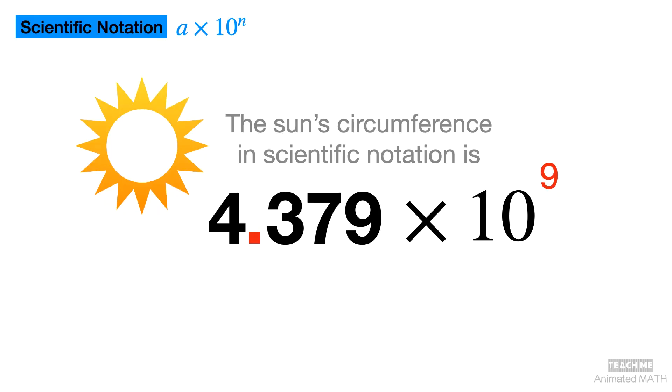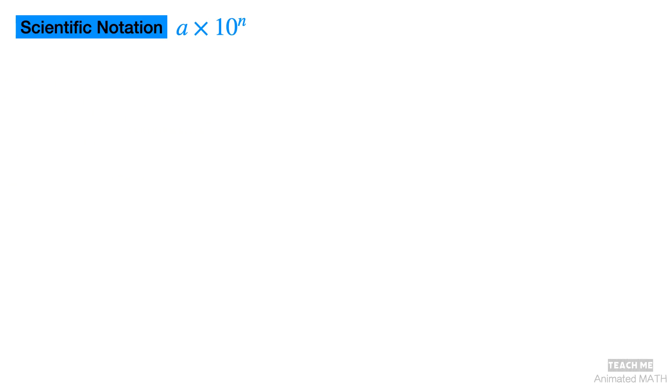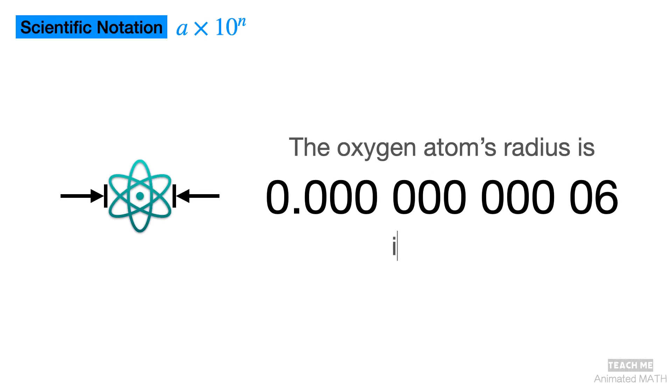Now let's try something very small, like the air we breathe. We breathe in oxygen every time, but it's so small our naked eye cannot see it. From research, the radius of an oxygen atom is this small number. How do you convert this number into scientific notation?